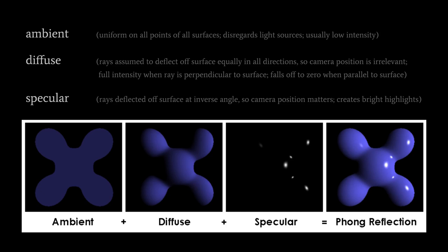The specular component accounts for light tending to bounce off surfaces at the inverse angle. If the camera is positioned in the path of the reflected angle, you get a much more intense light for that point, creating bright spots and making the object look shiny. In the real world, smooth metallic surfaces reflect light this way. In practice, a constant governs specular intensity so we can tweak it — making some objects look shiny and others rough.